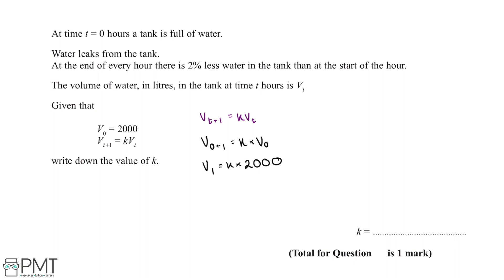Now what we've been told in the question is at the end of every hour there is 2% less water in the tank than at the start. So if after zero hours there are 2000 litres in the tank, then this means at one hour there will be 2% less water in the tank than there was at zero hours.